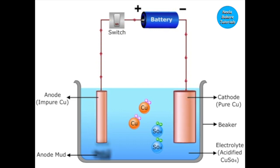As atoms of copper are coming out of the anode, the anode goes on becoming thinner. The impurities from the anode fall below and get collected in the form of anode mud.